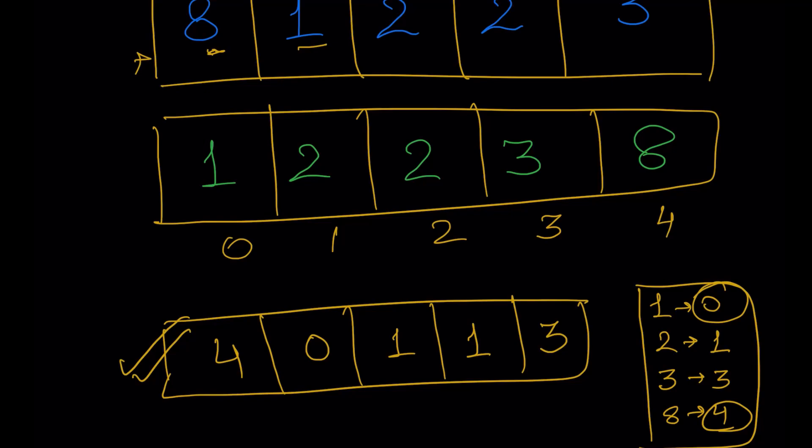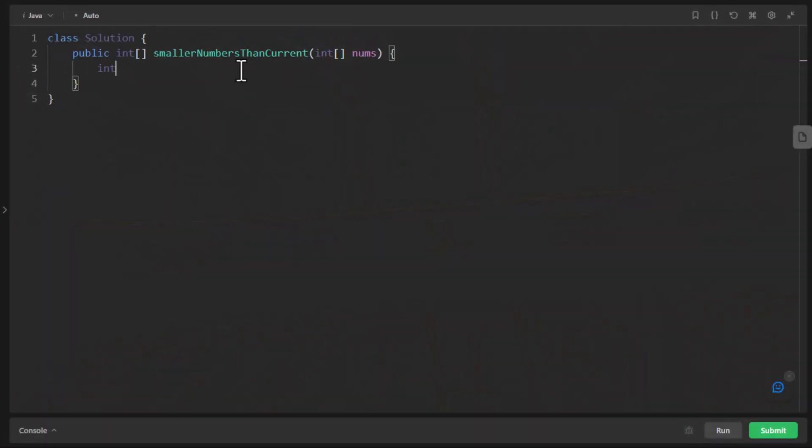Now it's time to code this particular approach. We'll start off with having a result array, and we can easily create a clone for the input array. Once we have this array, we'll just sort the result array in order to find out the indexes.